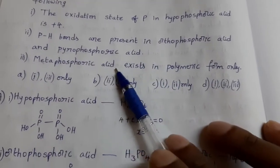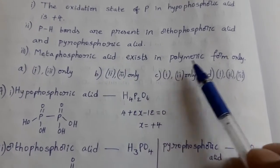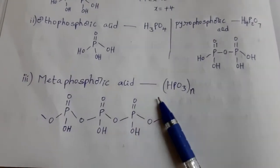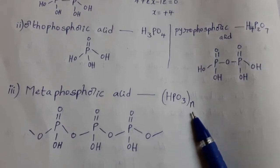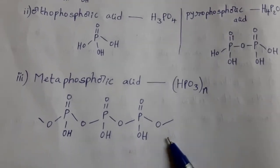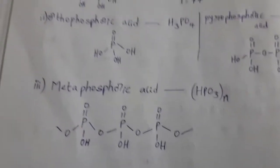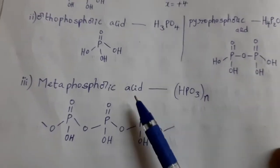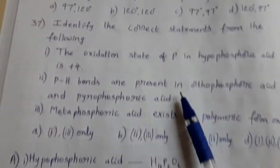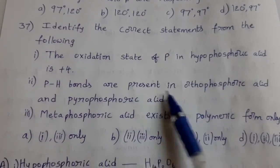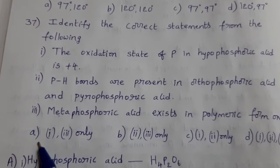Next, metaphosphoric acid exists in polymeric form. Metaphosphoric acid formula HPO3, n times. So this is the polymeric structure. Number of acid molecules attached to one another. This is the linear polymeric structure for this acid. Statement three correct. One and three correct. Suitable option A is the answer.